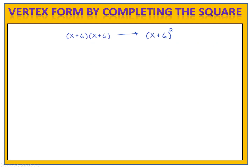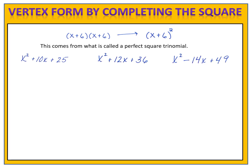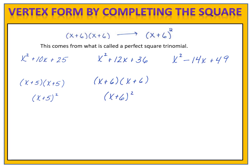This phenomenon, where I have two binomials that are the same — the binomial squared — actually comes from something very cool called a perfect square trinomial. Here are three examples of perfect square trinomials. When I factor x squared plus 10x plus 25, I end up with x plus 5 times x plus 5, which is x plus 5 squared. And x squared plus 12x plus 36 factors into x plus 6 squared. And x squared minus 14x plus 49 factors into x minus 7 squared.